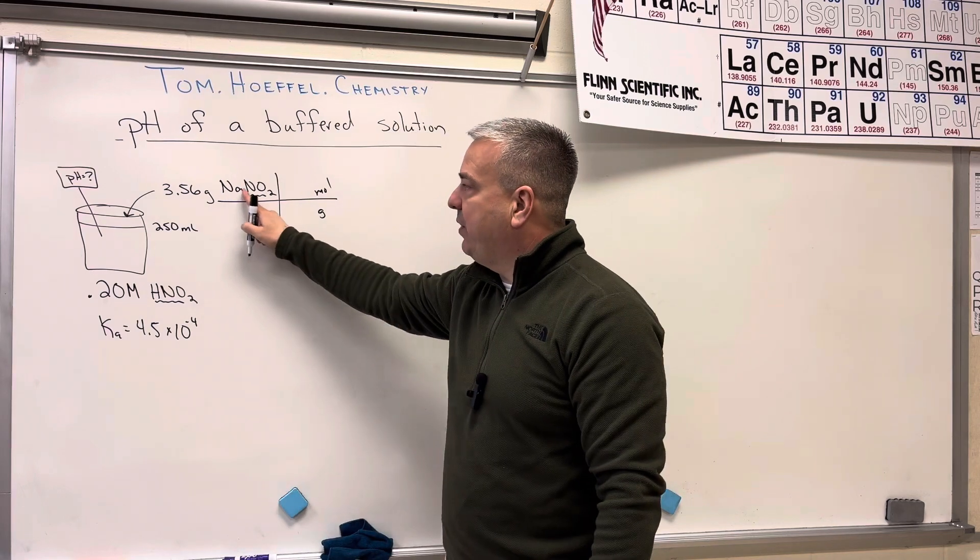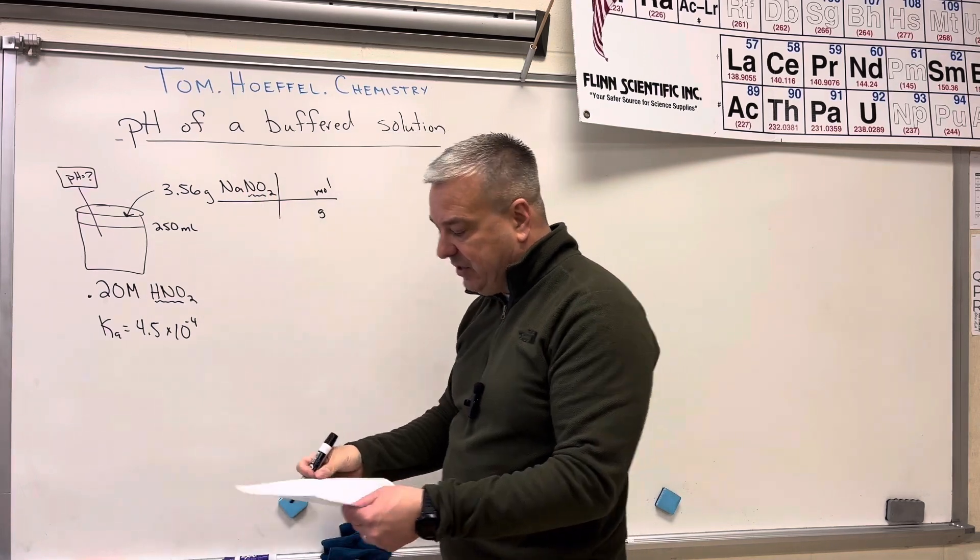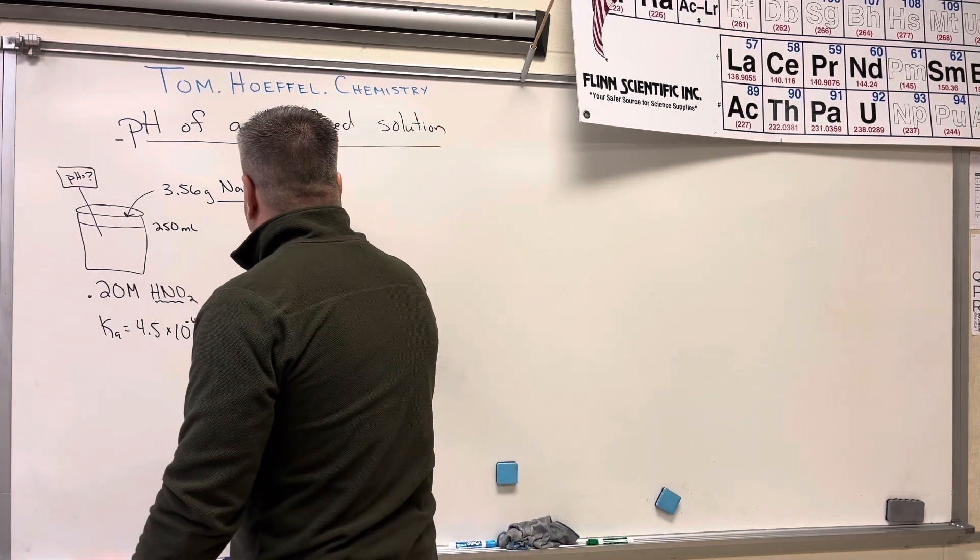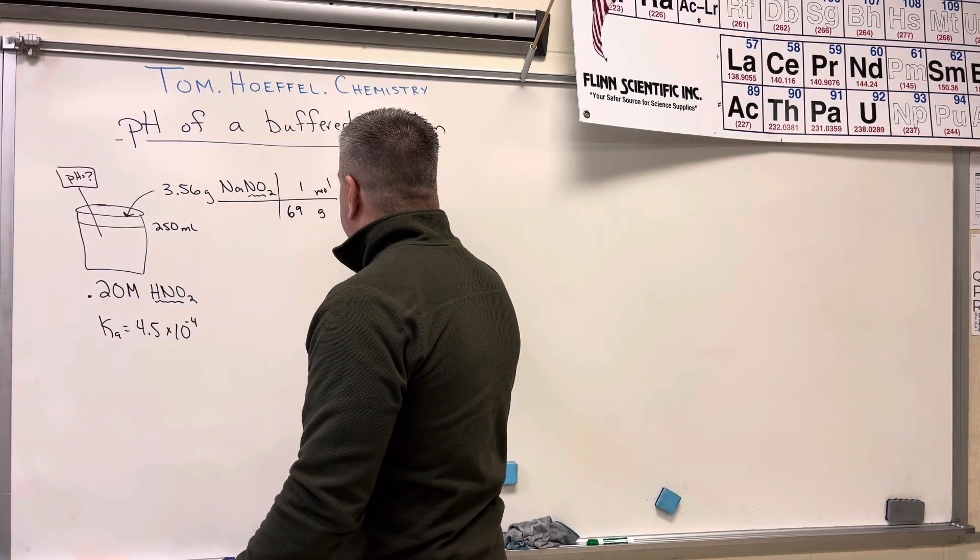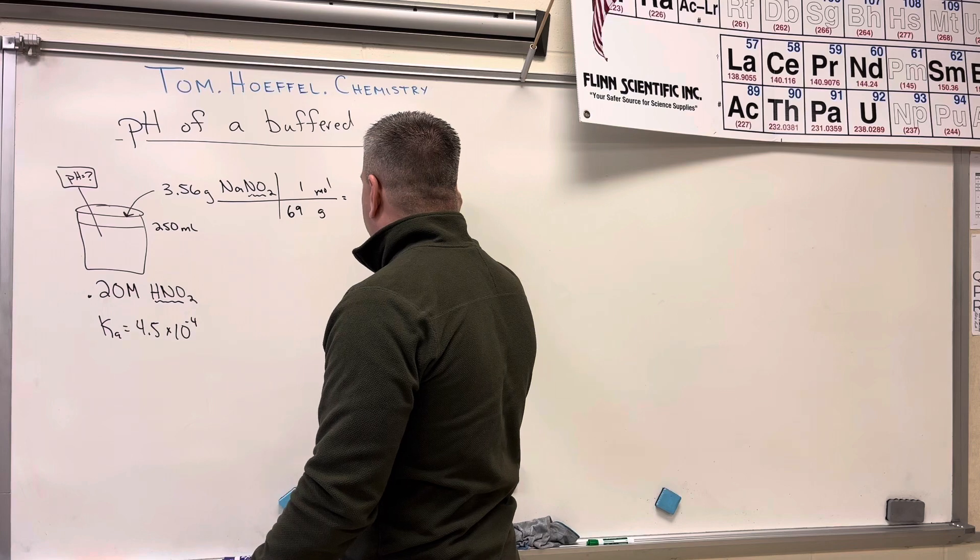And I do that by adding one sodium, one nitrogen, and two oxygens. And it comes out to be 69 grams per mole. So the amount of moles that I have is 0.0516 moles,